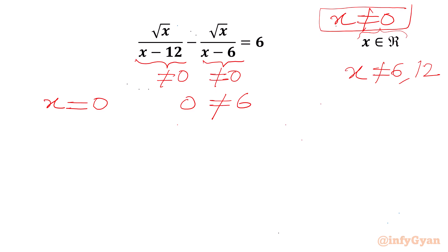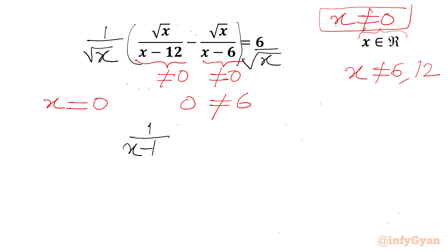So we can divide both sides by square root of x. After dividing by square root x, we get 1 over (x minus 12) minus 1 over (x minus 6) equal to 6 over square root x.